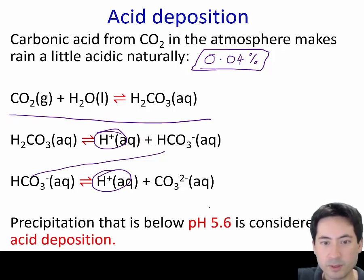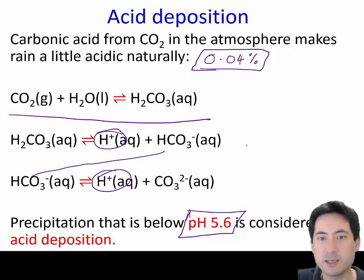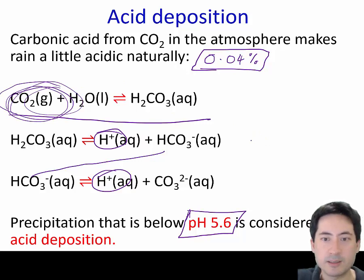The number for the IB syllabus is pH 5.6. So the pH has to be less than 5.6 - in other words, the acidity has to be due to more than just carbon dioxide forming carbonic acid for it to be considered acid deposition.